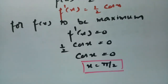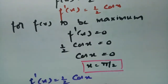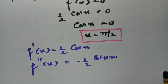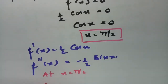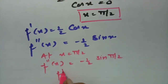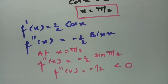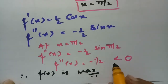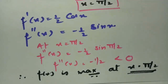To confirm it's a maximum, we take the second derivative: f''(x) = −(1/2)sin(x). At x = π/2: f''(π/2) = −(1/2)·sin(π/2) = −(1/2)·1 = −1/2, which is less than 0. Therefore f(x) is maximum at x = π/2.